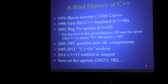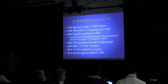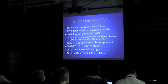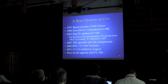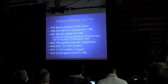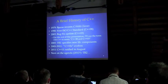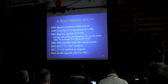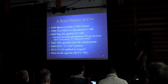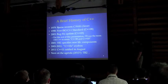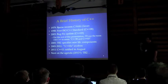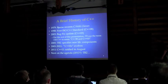A little bit of history. C++, of course, began with C with classes. The first original standard was 1998. In 2003, a bug fix update was released with no major changes to the language, just cleaning up some of the standard needs. For the rest of the presentation, I'm going to refer to pre-C++11 as old C++.